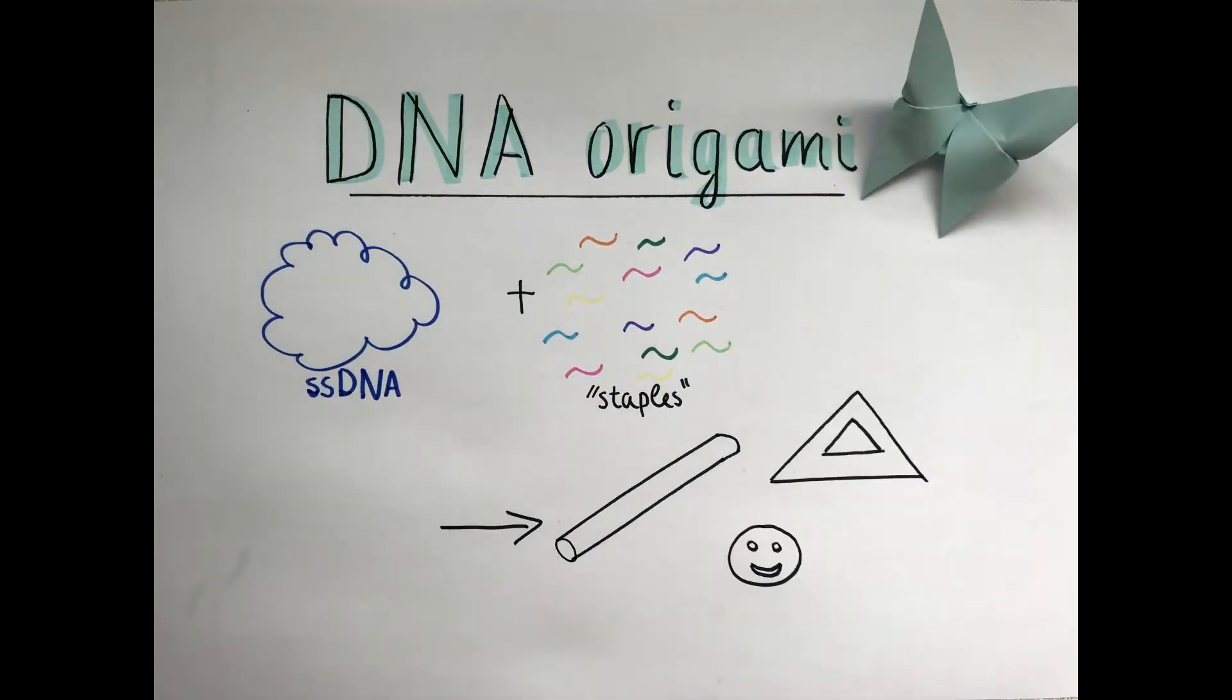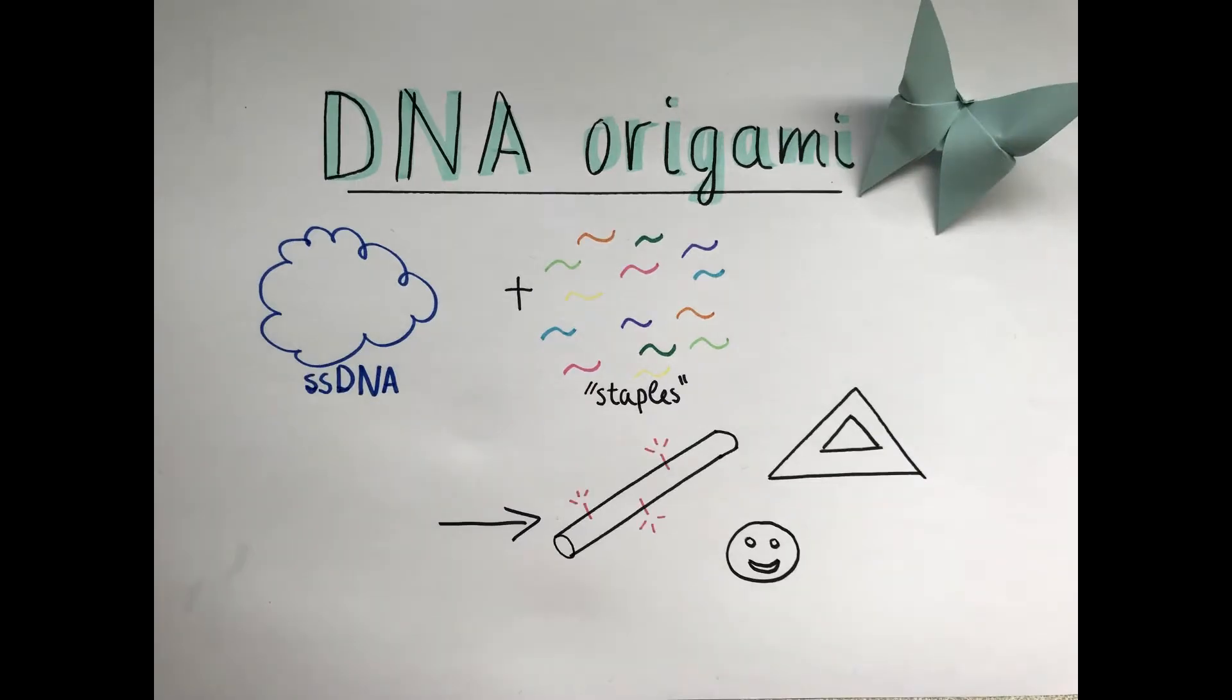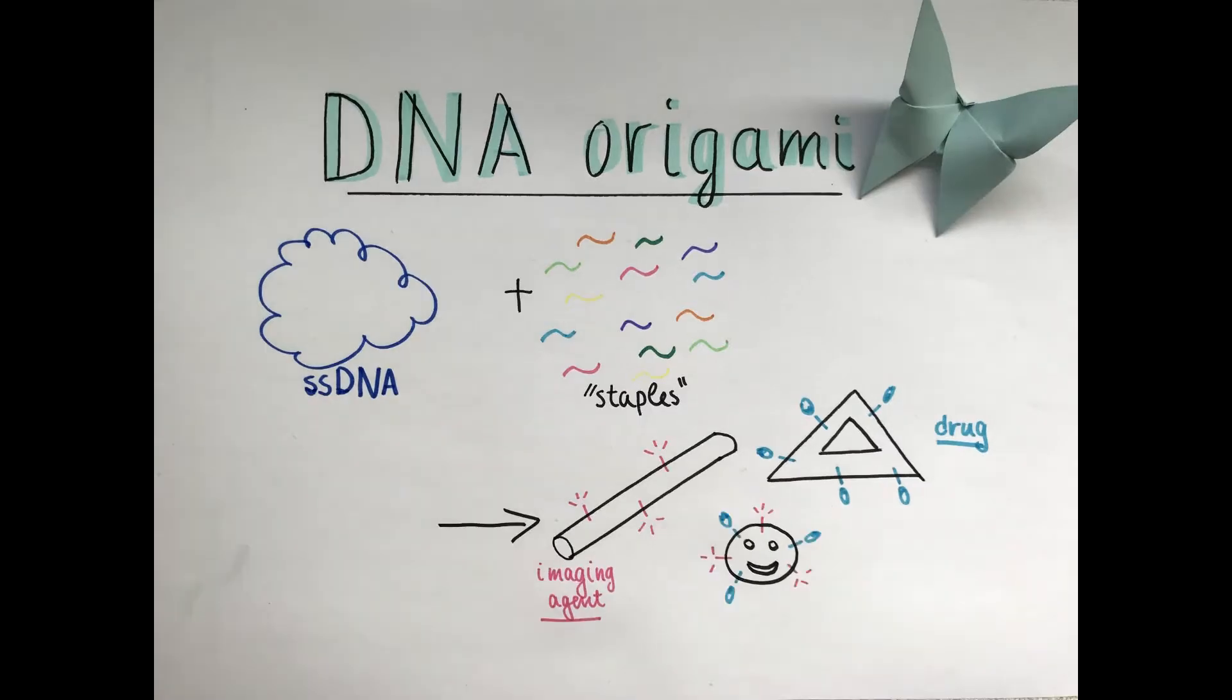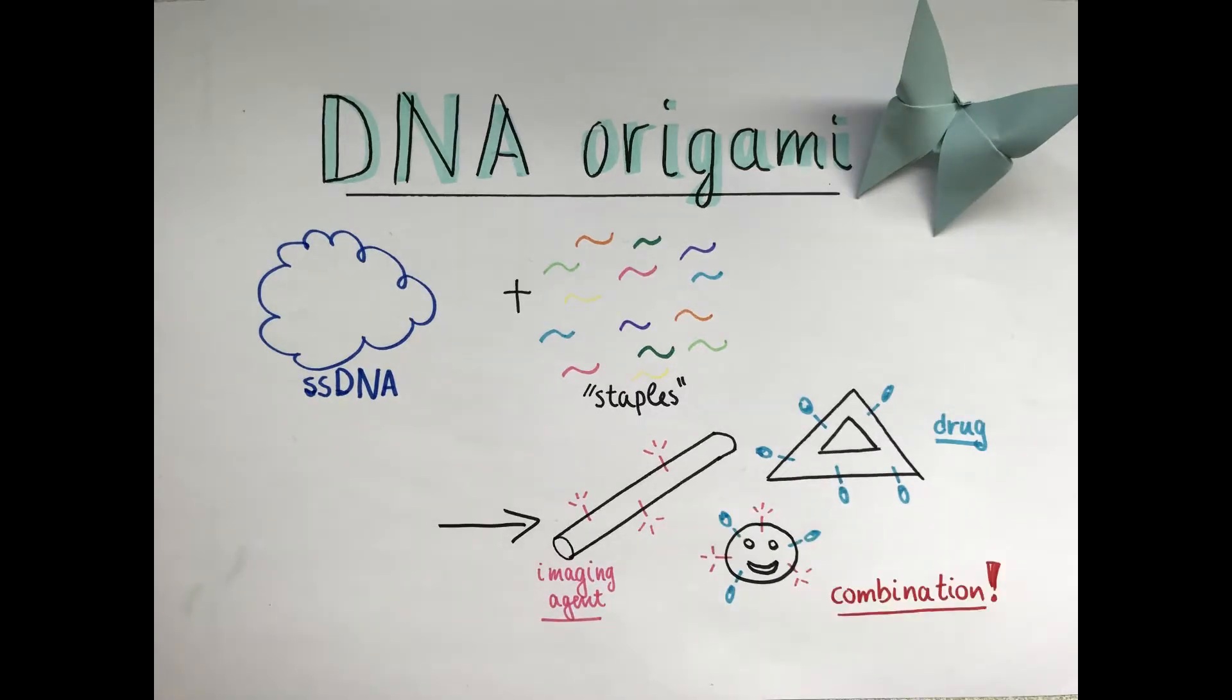Depending on what you want to do, you can program the DNA origami to take any shape by using appropriate complementary oligonucleotides. You can load them with imaging and therapeutic agents, or even a combination of both.